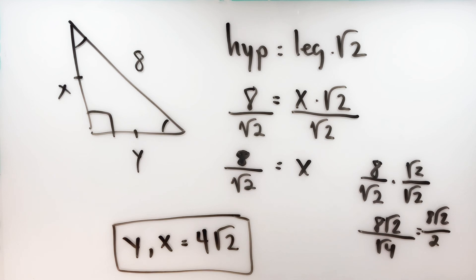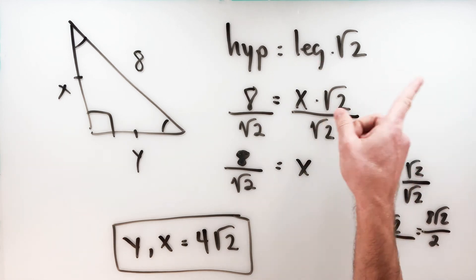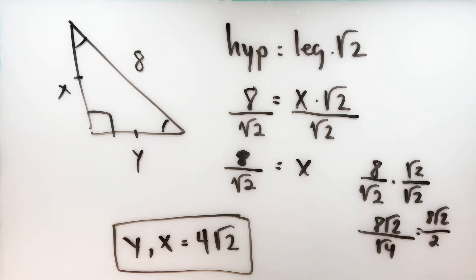That's it for the 45-45-90 right triangle. Stay tuned for the second special right triangle in the next video — if it's already available, you can find it right up here. As always, if this video was helpful please give it a like and subscribe to the channel if you'd like to see more videos. Share it with somebody you think it might help. I appreciate you watching — thank you, and we'll see you next time.